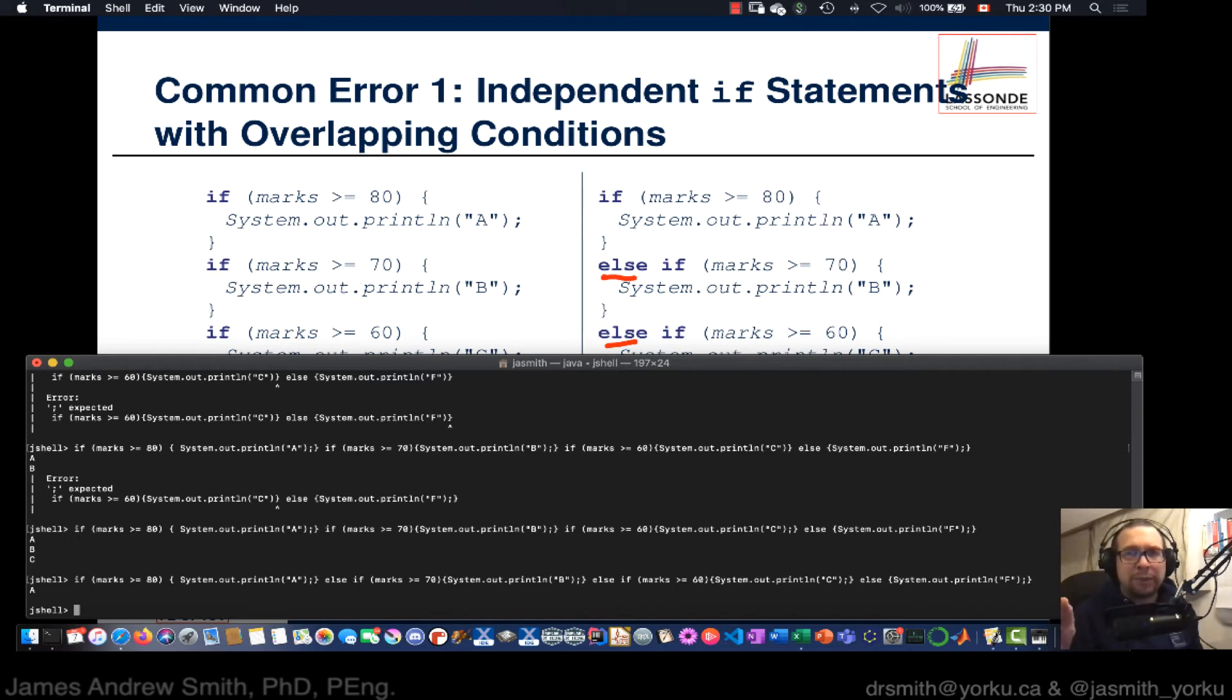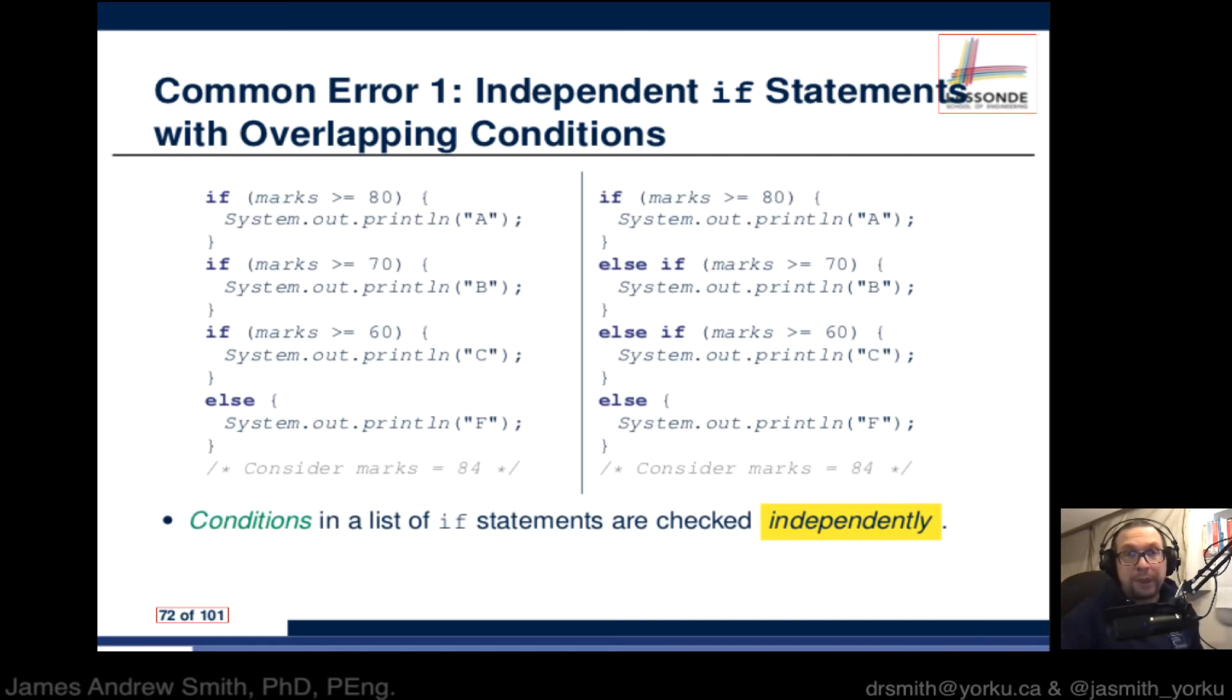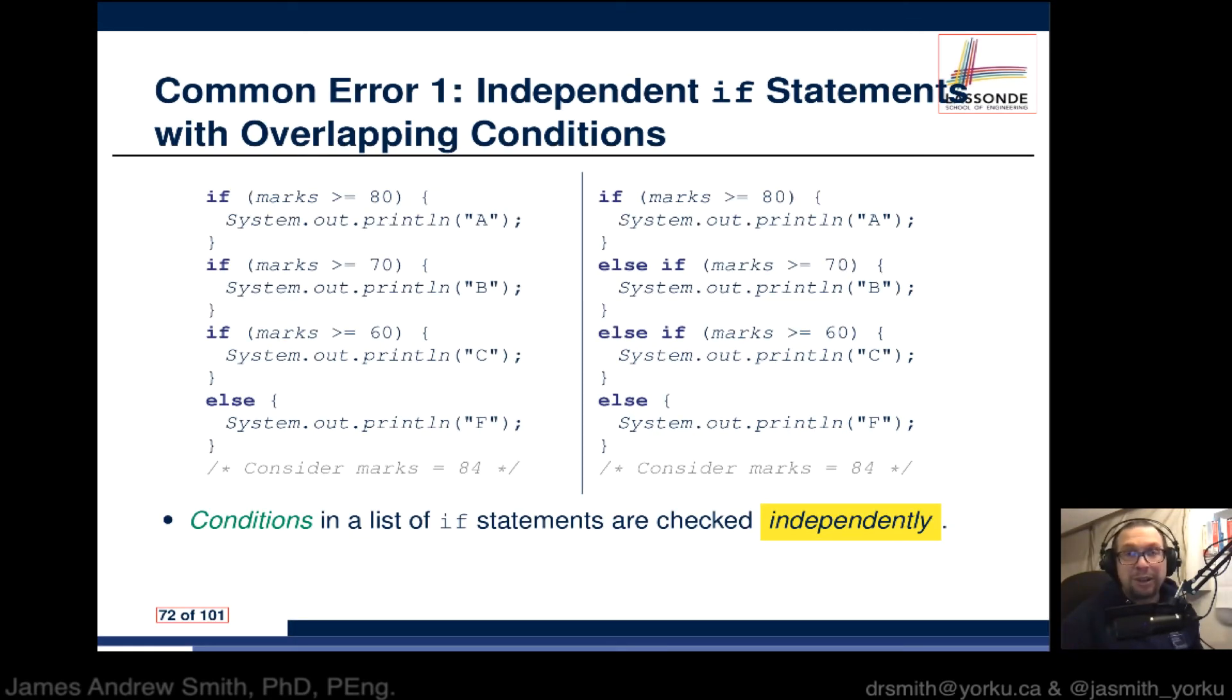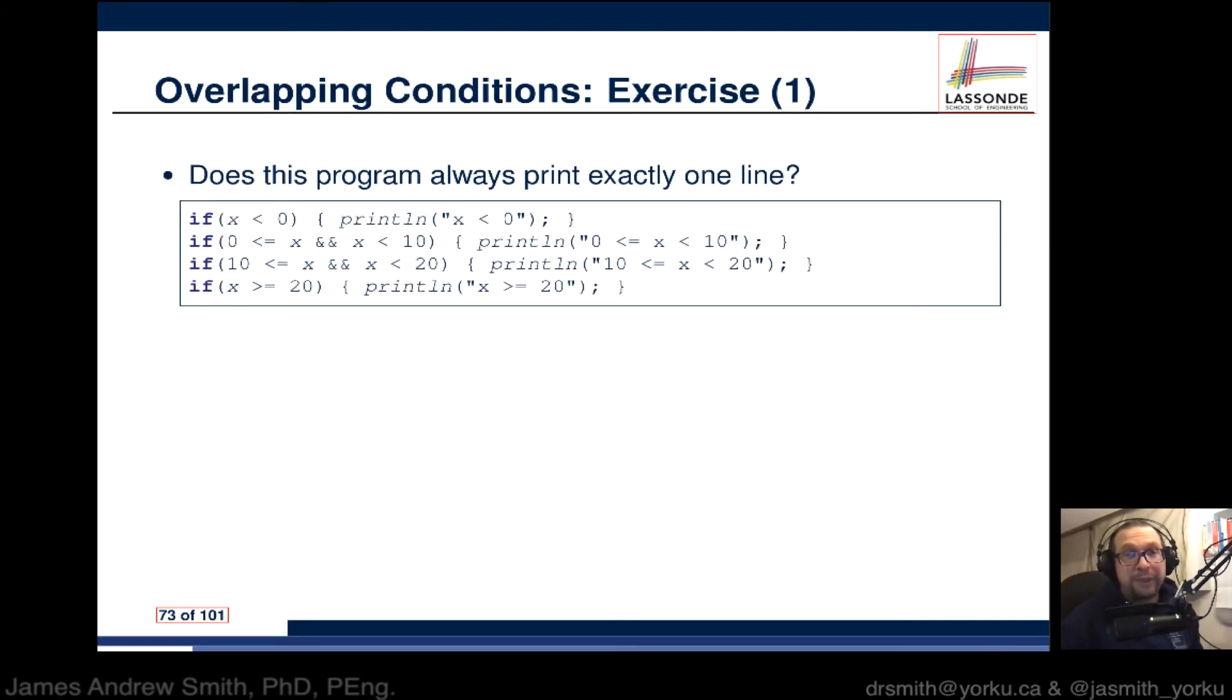So this is really important, is that when you're setting up an if structure, that you don't, if you don't intend to, don't have overlapping conditions. Because otherwise, you'll get the wrong answer. So that's super important. So conditions in the list of if statements are checked independently. In a single if statement, only the first satisfying branch is executed. But you've got to make sure that that else is there. Otherwise, they're independent ifs. You want to make them dependent on each other in most cases.